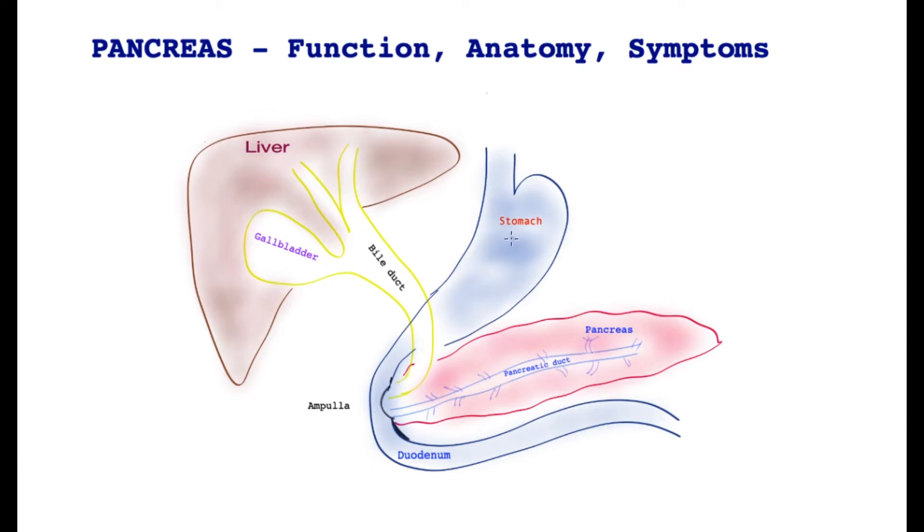There's a gullet over here connected to the stomach. The stomach churns the food with very early digestion, and it comes down into the small bowel.